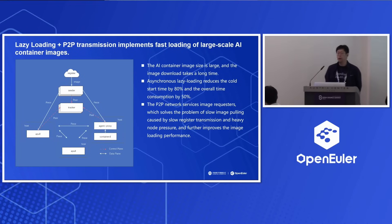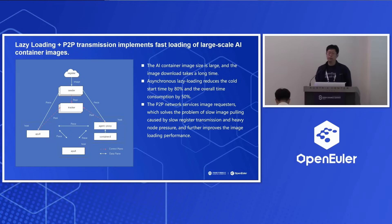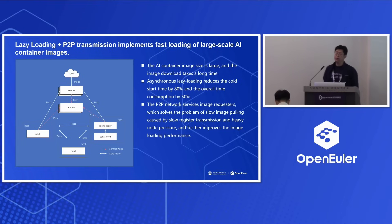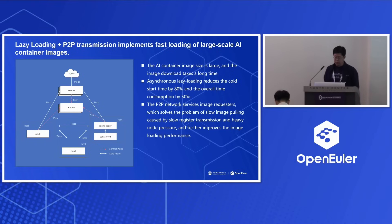For deployment and booting, the AI container image is quite large and the pain point is that the time to transmit the image and boot is quite slow. We have two technologies. The first is synchronized lazy loading: when the image is booting, only the necessary part is transmitted rather than the entire image, and the entire image is transmitted asynchronously. This can save quite some loading time — for example, it can save 80% of the loading time and speed up booting.